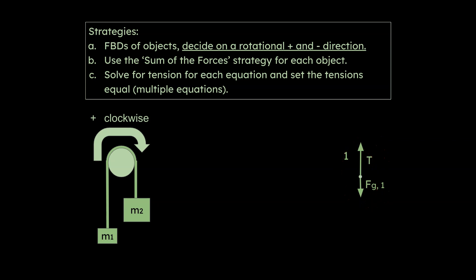First, we draw a free body diagram of the first object. The tension arrow is drawn longer than the force of gravity on the first object because I'm assuming M2 is more massive than M1. So starting from rest, the system rotates downward for M2 and upward for M1. One key thing we do at the beginning is decide on a rotational positive and negative direction — thinking about forces in the clockwise or counterclockwise axis — rather than just the y-axis. We call the assumed direction of motion positive, which makes the problem easier.